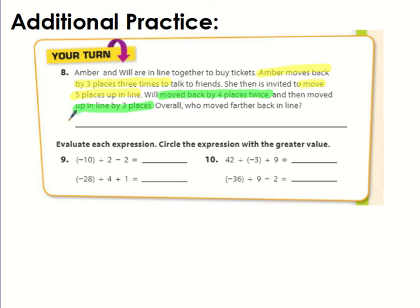So Amber's would be, she moved back three times three times. So you could either do negative three by three or you can do three times negative three. And then remember, she moved up just five spaces. Then we have Will. He moved four places twice. And then moved up three.